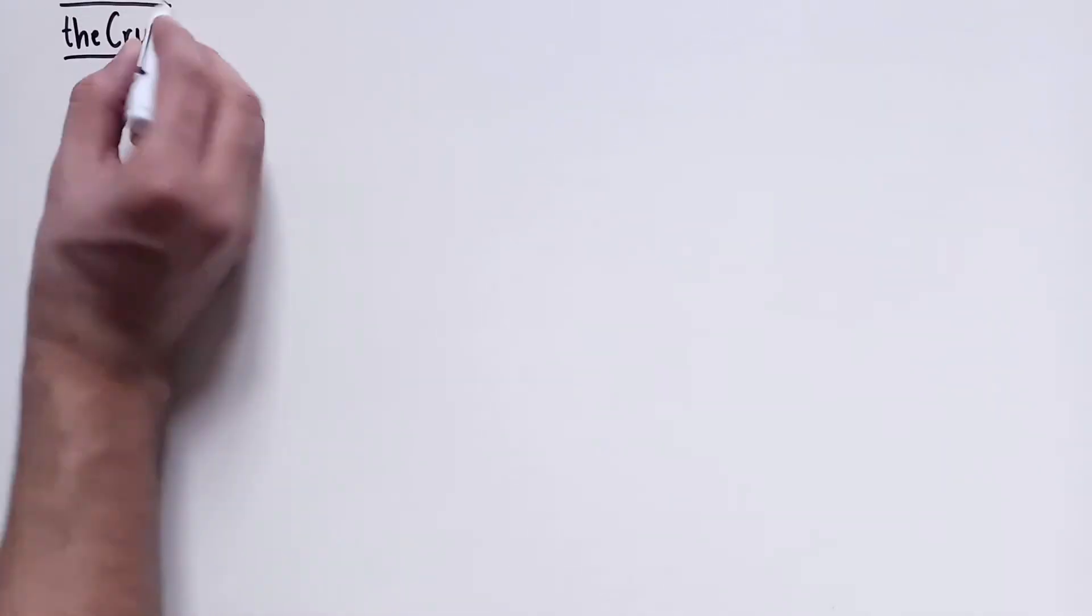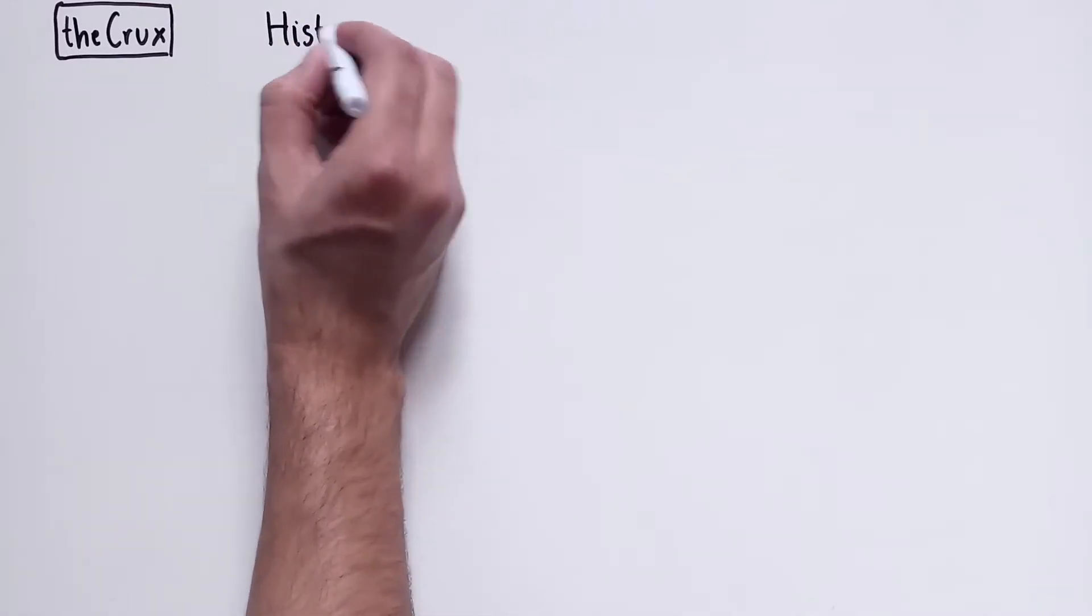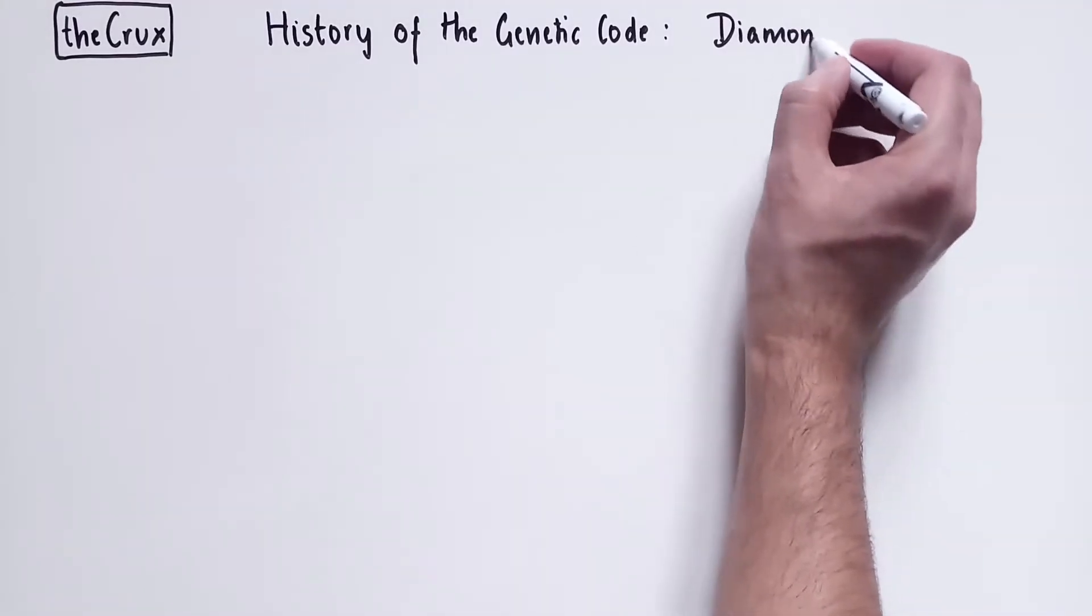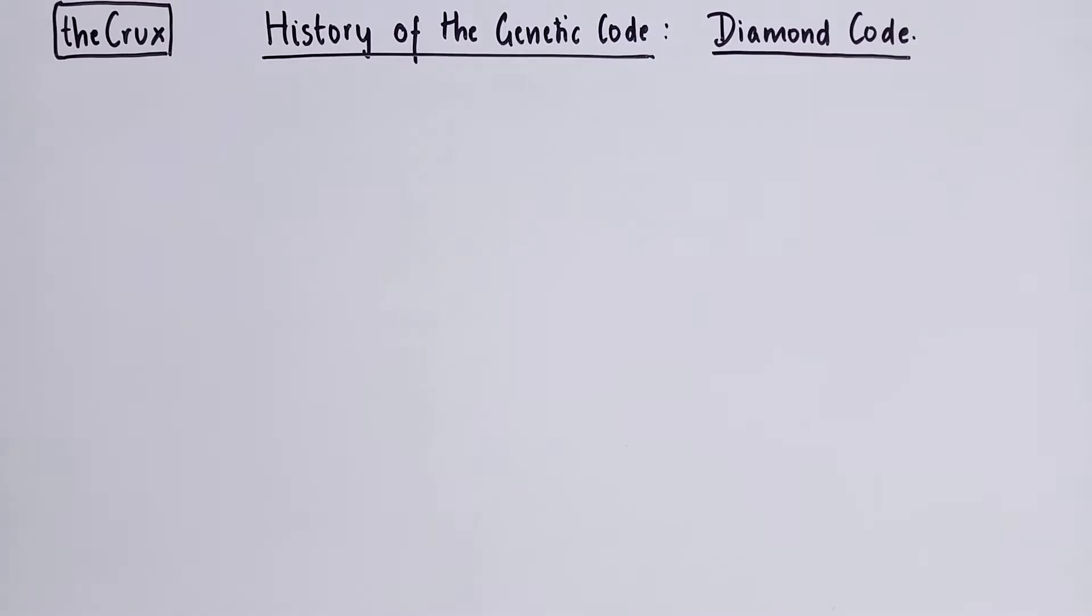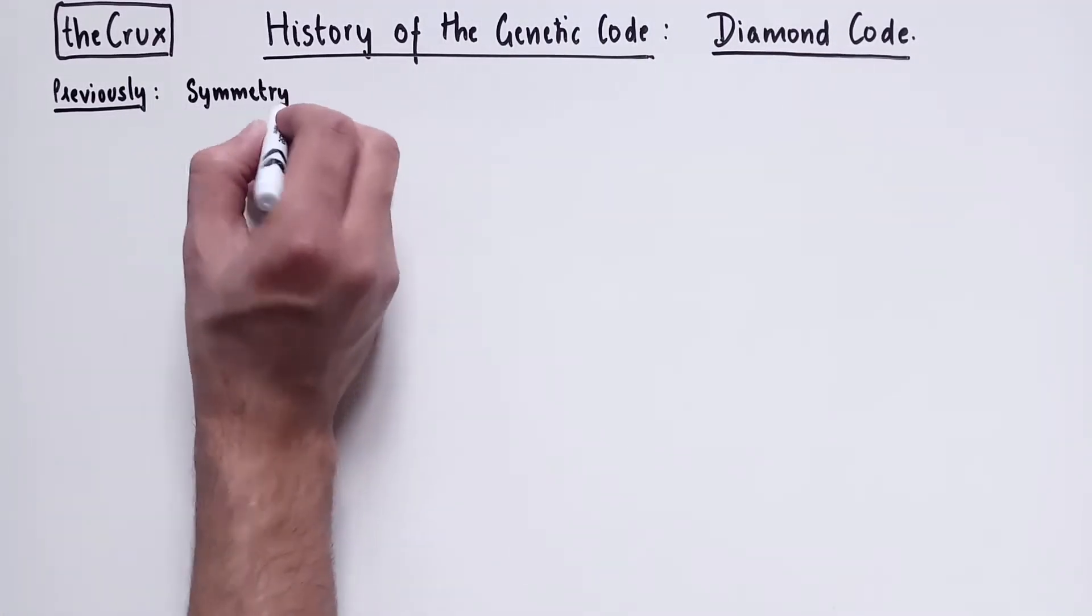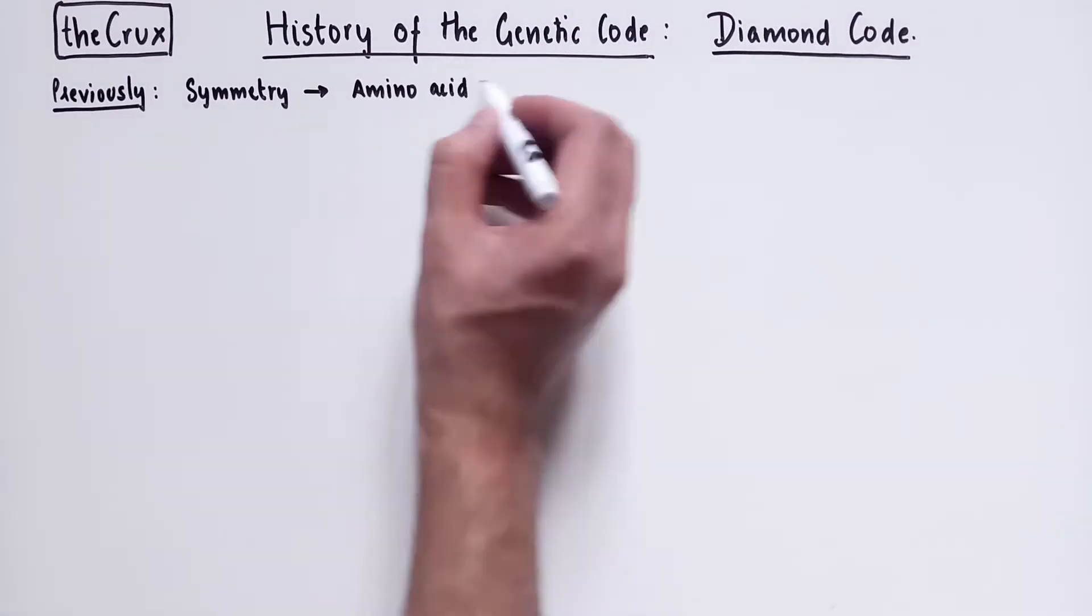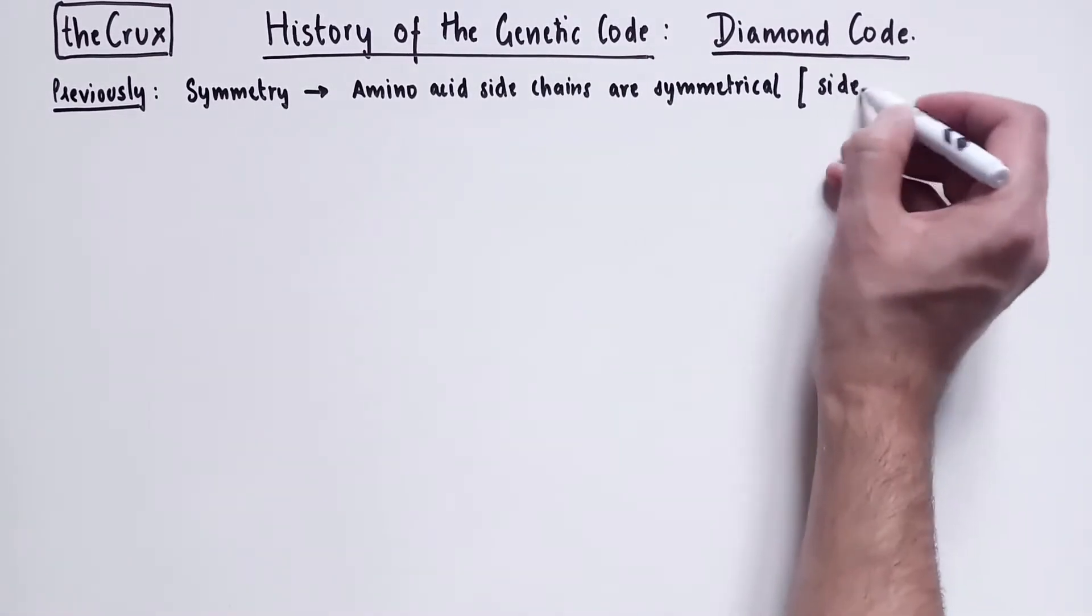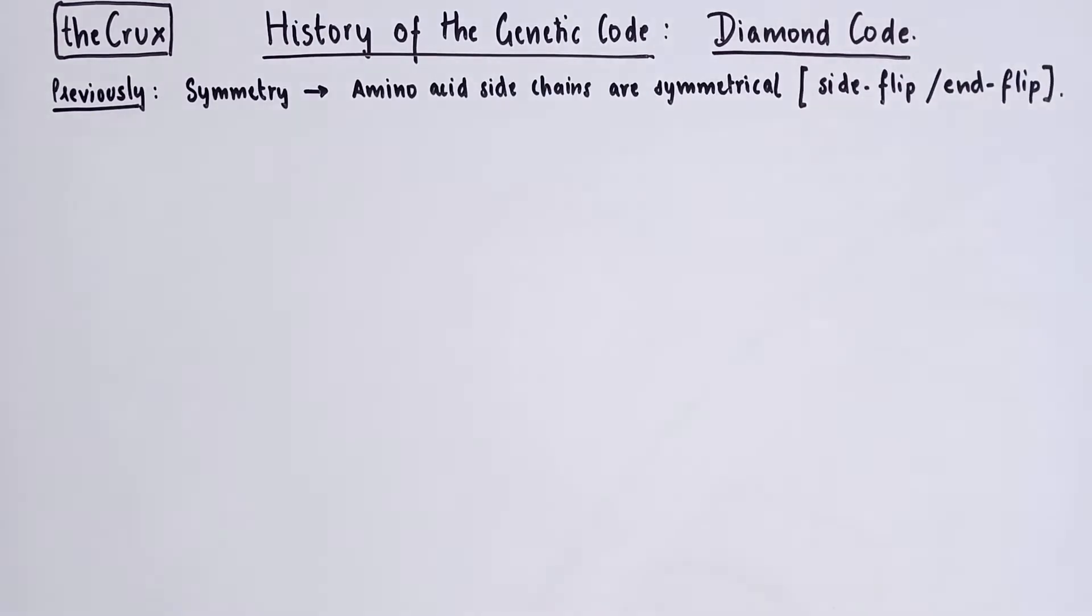Hey, welcome to The Crux. In this video we continue our discussion on the history of the genetic code and specifically we are wrapping up our discussion on the diamond code. Previously we have talked about the symmetry basis that George Gomoff postulated which simply states that amino acid side chains are symmetrical and thus the code can be side flipped or end flipped without any change in the meaning. If you want to learn more about the fundamentals of diamond code, check out my previous videos. I've linked them in the description below and in the cards on the top right corner.